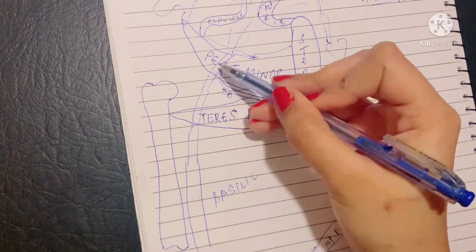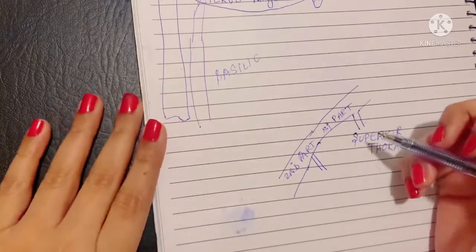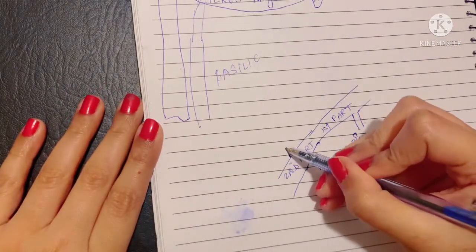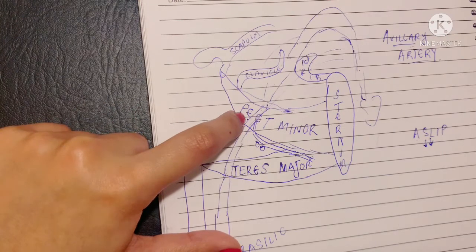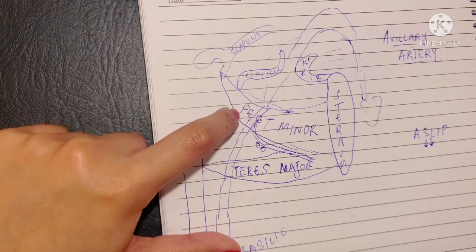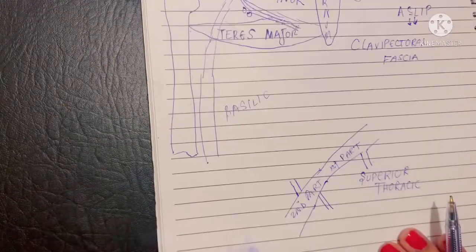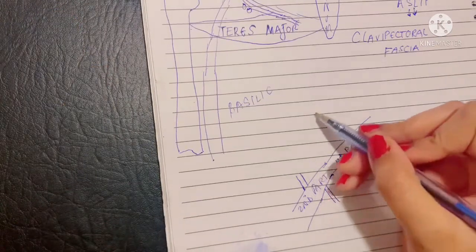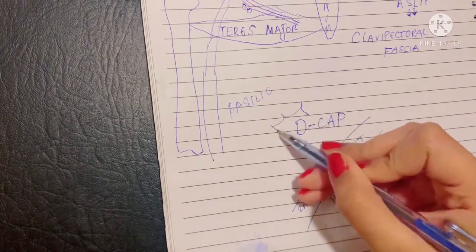Moving on, there is a second branch that the second part of the axillary artery gives off. Now this is called the acromiothoracic branch. It arises deep to the pectoralis minor and it pierces the clavipectoral fascia and it ends off by giving four branches, namely the D-CAP abbreviation that you guys need to remember.